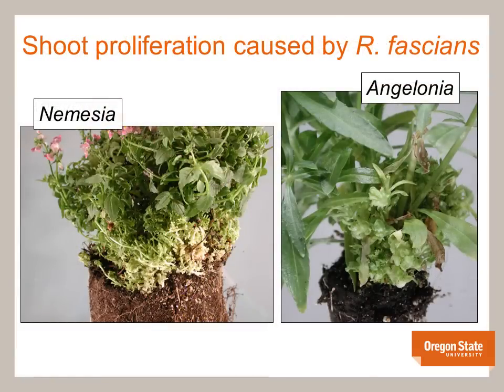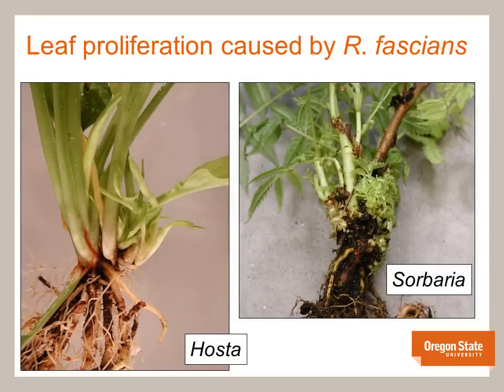Stunting and shoot proliferation are additional manifestations of leafy gall disease. Shown here are Nemesia and Angelonia plants with shoot proliferation originating at soil level. These hosta and sorbaria plants are good examples of leaf proliferation induced by Rhodococcus fascians. Leaf proliferation often occurs at soil level but can also form higher up on stems.